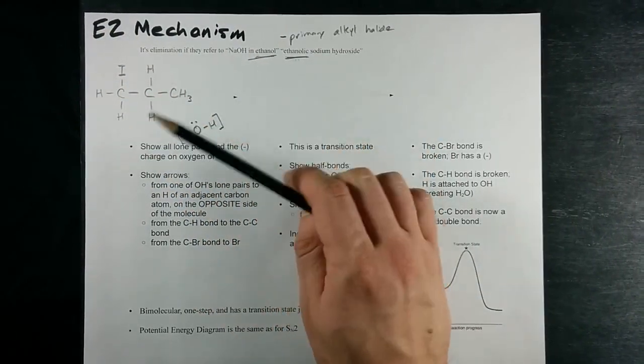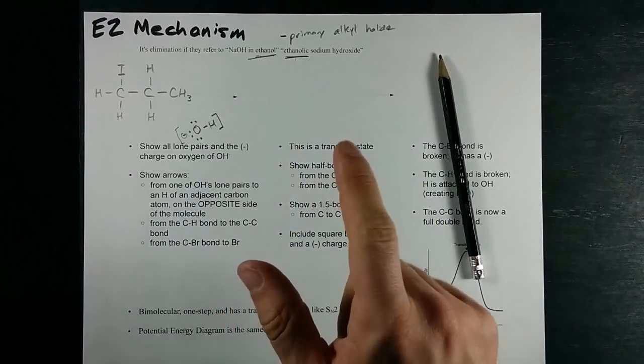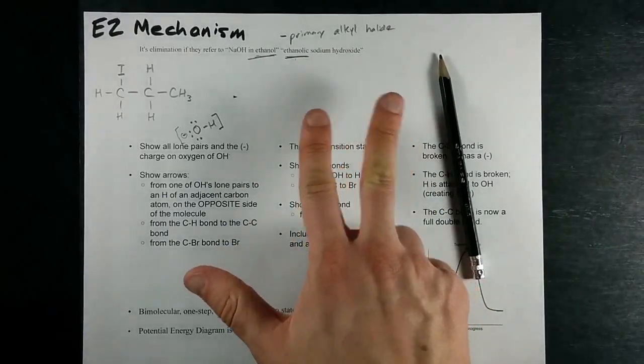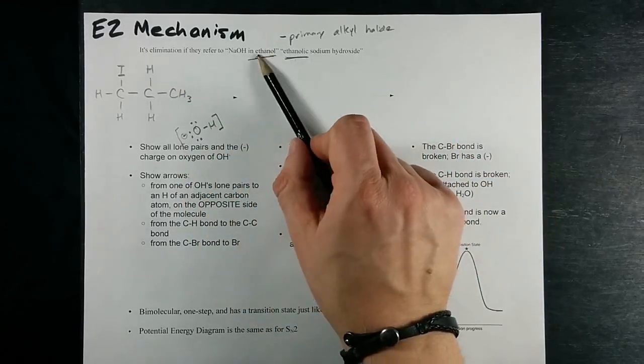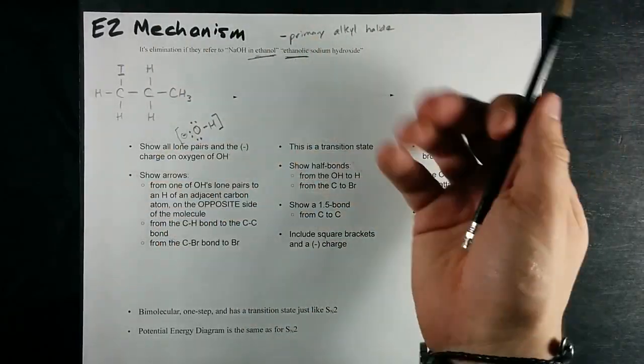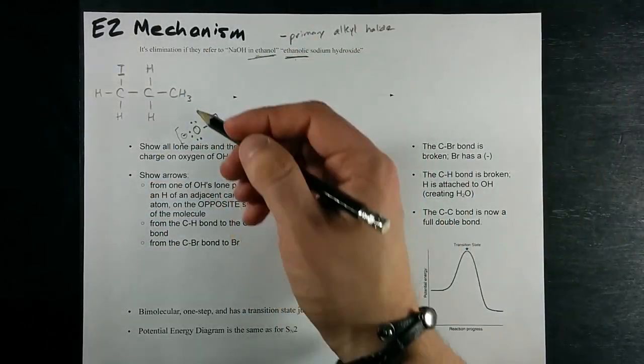If you're in university, it depends on solvent, nucleophile, temperature, all that other kind of stuff. But IB makes it very easy for the kids because it's grade 12. So let me show you.